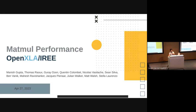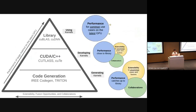I'm Manish Gupta, representing matmul performance in OpenXLA IREE. I'd like to start with a pyramid in my head: at the apex you have performance on large matmuls on bleeding-edge hardware for common cases, and at the base you gain extensibility, fusion opportunities, and collaboration in the codebase. At the apex are libraries like cuBLAS and cuDNN. Below that you have CUDA and C++ kernels like Cutlass and CUTE — open-source header-based libraries enabling extensibility for uncommon cases. At the base you have code generation, where performance catches up to library and hand-written kernels.